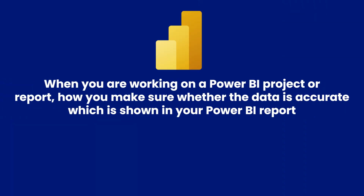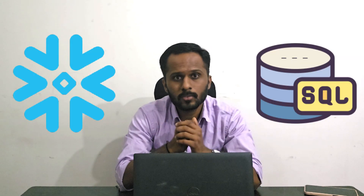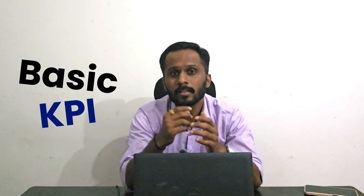The first question was: when you are working on a Power BI project or report, how do you make sure the data shown is accurate? There are three to four ways to check data accuracy. The first way is — let's say you have created a KPI showing total sales as 10,000 rupees. Whatever your data source is — SQL, Snowflake, Azure Databricks, or any other — you write a query like SELECT SUM of that particular column FROM table. If SQL is also showing 10,000 and Power BI is also showing 10,000, the number is validated 100% correct.